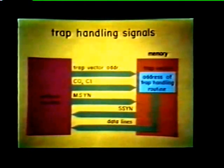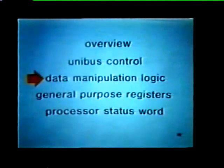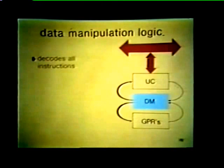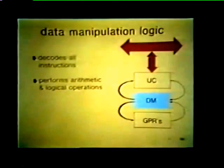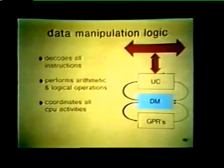That wraps up our discussion of the unibus control, so let's look at the next major processor element. The data manipulation logic is the second of our three major processor elements and performs three prime functions. The first is to decode all instructions to find out what operation the processor is to perform, including where the operands are located and where to store the result. The second job is to perform required arithmetic operations such as add or increment, and logical operations such as complement or logical AND and OR. Finally, the DM coordinates all activities within the processor, routing information to and from the GPRs and unibus control.